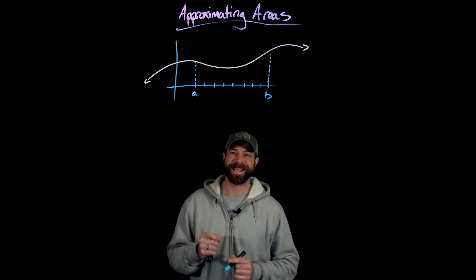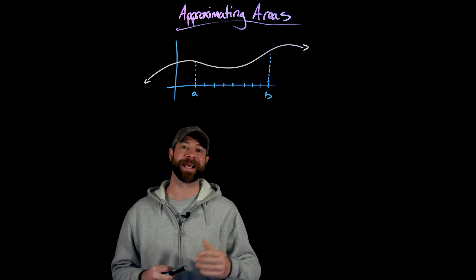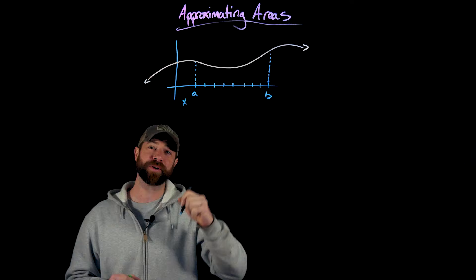Welcome back. In this video, we're going to get into the details of actually approximating the areas under a curve given an interval. In this case, we're looking at the interval labeled A to B. Our first job is to split this interval into equal sub-intervals. We're going to label the points where we make this split — this will be a partition, or a regular partition, of this interval.